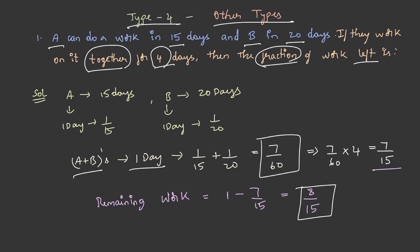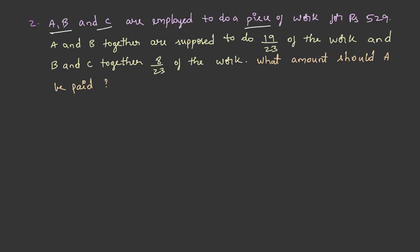A, B, and C are employed to do a piece of work for rupees 529. A and B together are supposed to do 9 by 23 of the work, and B and C together 8 by 23 part of the work. What amount should A be paid? Let's solve this.